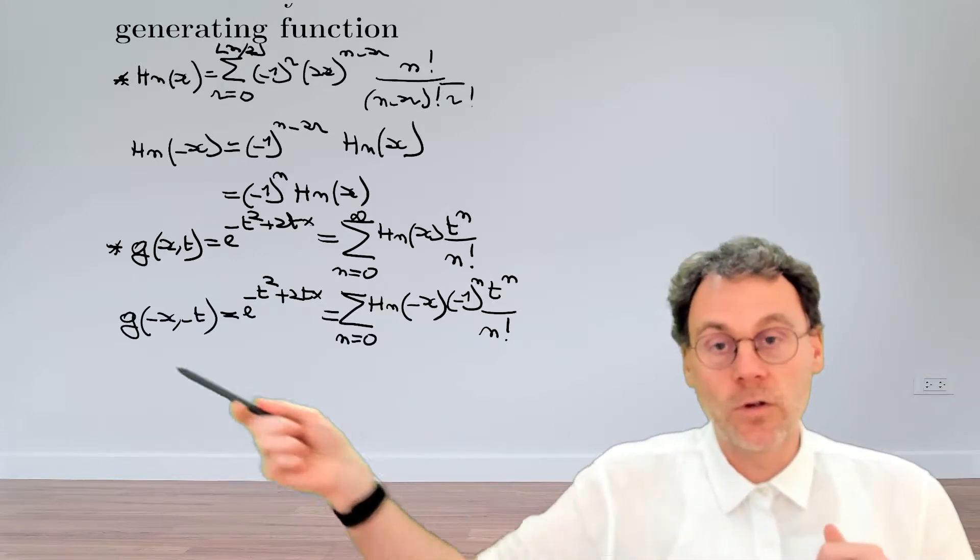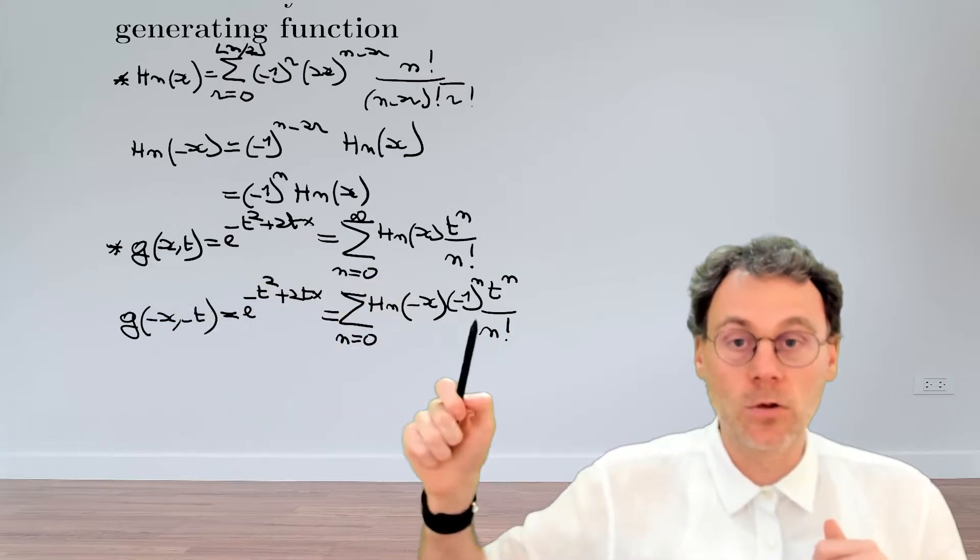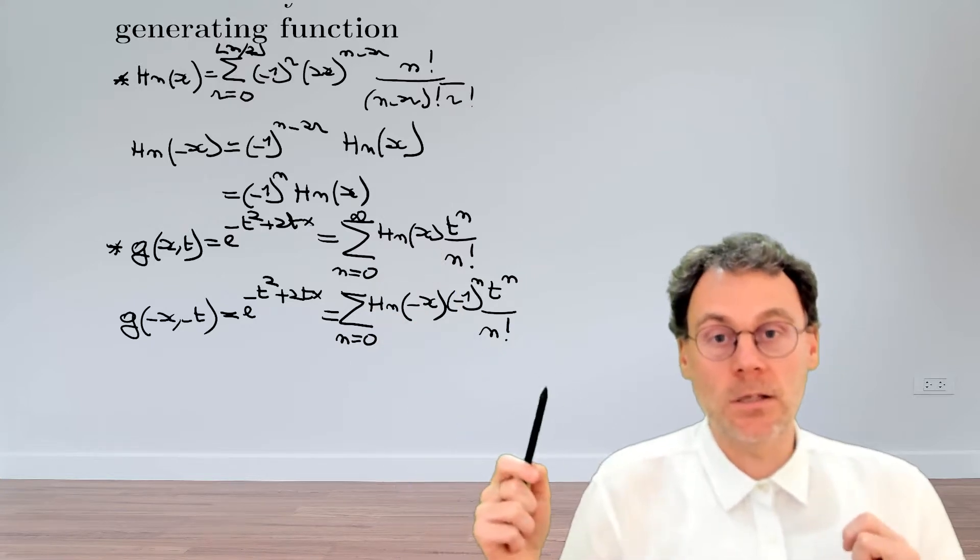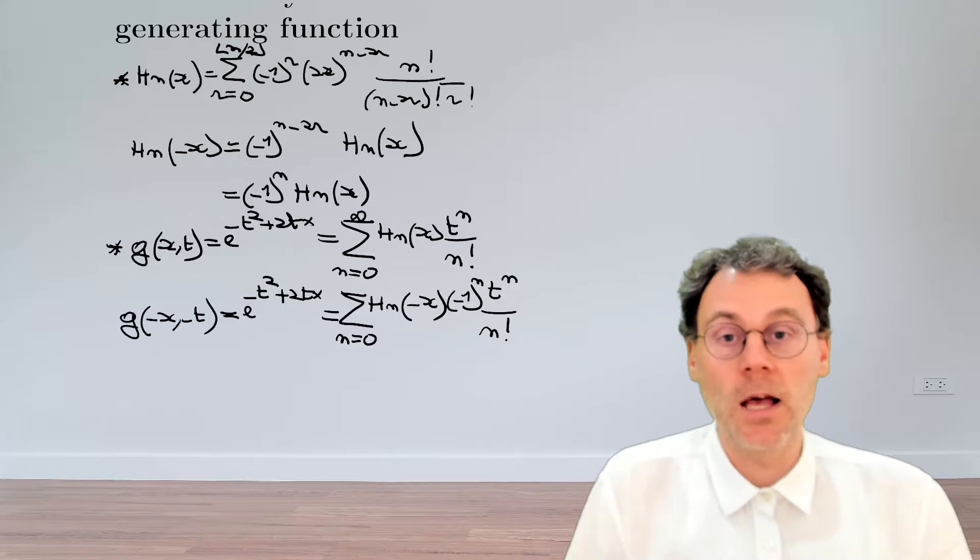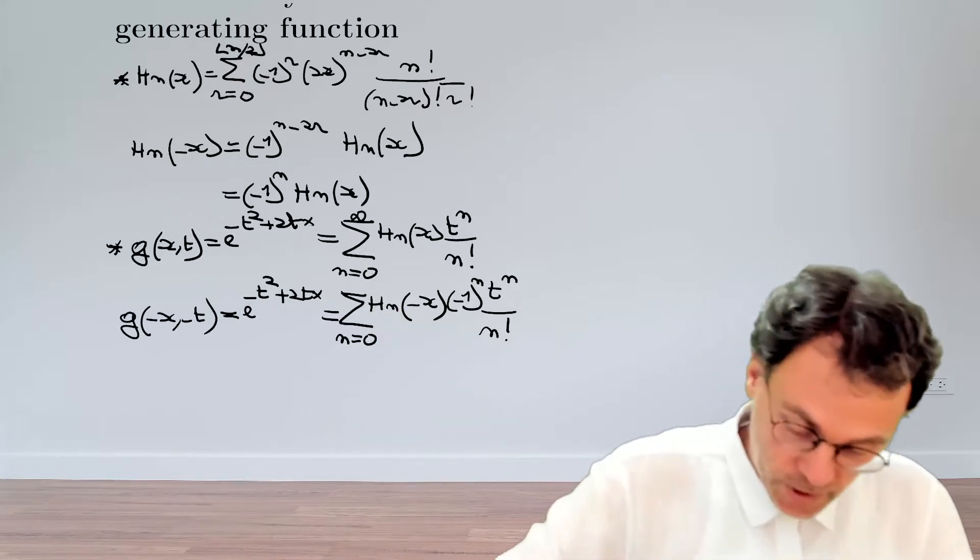So since for these two expressions, the left hand sides are the same, it also means that the right hand sides are the same. And that means that since both of them are series expansions in powers of t, the coefficient for a given power of t should also match.